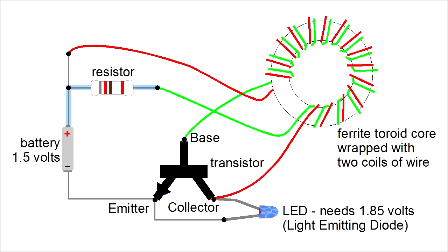When it starts up, voltage from the battery is across the resistor, green wire coil, and the base and emitter of the transistor.